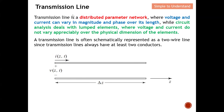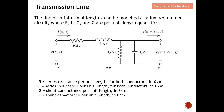In transmission line theory, we consider the line as a distributed parameters network, where voltage and current vary in magnitude and phase over its length. Circuit theory, on the other hand, deals with lumped elements where voltage and current do not vary along the physical dimension of the element. A transmission line is often schematically represented as a two-wire line since it always has at least two conductors. If we consider a very small section of the transmission line, we can use lumped elements to represent that short length. I will derive the formulas with proper units in my next video.